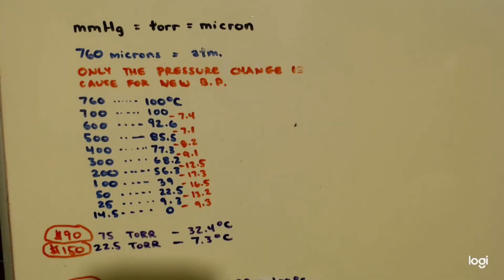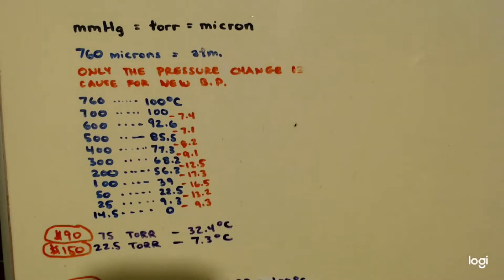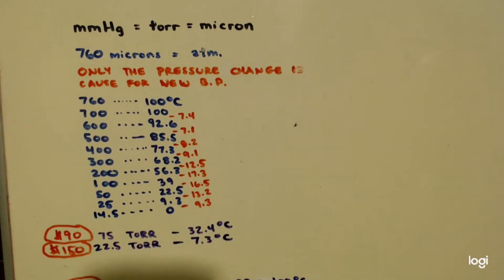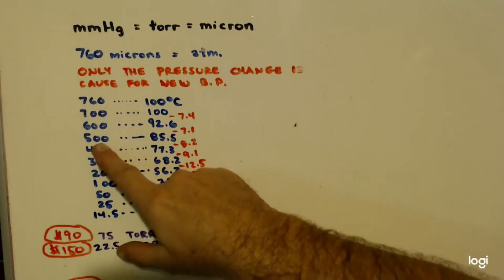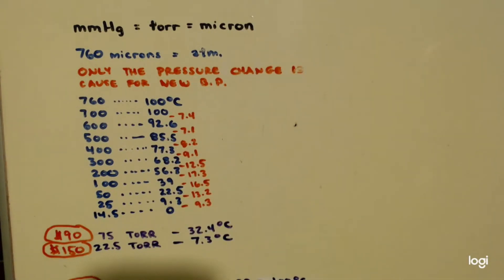When you're doing a vacuum distillation, there's only one thing that causes a new boiling point when you change the pressure: how much you change the pressure and what the original boiling point was. For example, at 500 Torr water boils at 85.5°C. That means any liquid that boils at 100°C at atmospheric pressure will boil at 85.5°C at that same pressure — no matter what it is. The only things that matter are the original boiling point and the new pressure. No other properties matter when it comes to changing the boiling point of a solvent by pressure change.